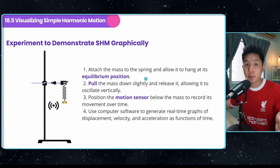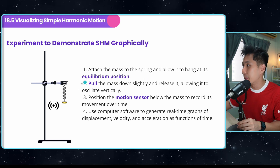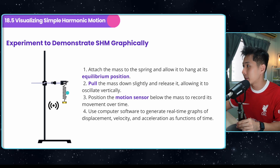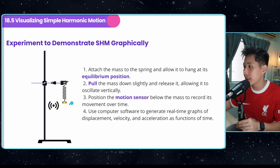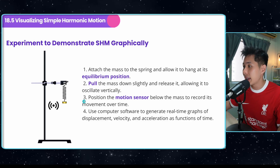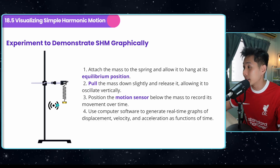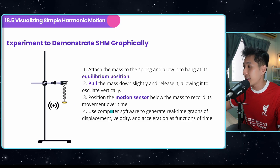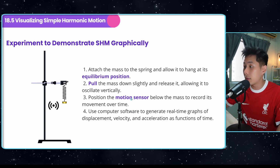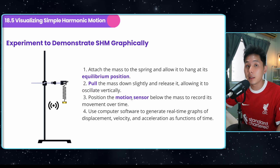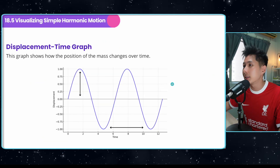Here is an experiment to illustrate SHM. Attach a mass to a spring at the equilibrium position and pull it down. At the same time, place a motion sensor and use computer software to generate real-time graphs of displacement, velocity, and acceleration, which we will now go through.